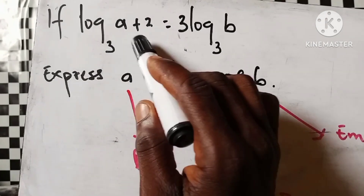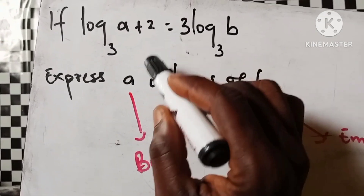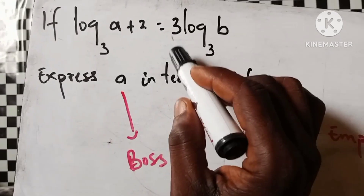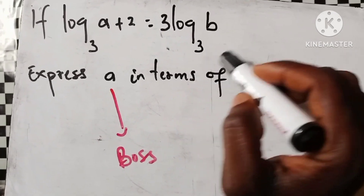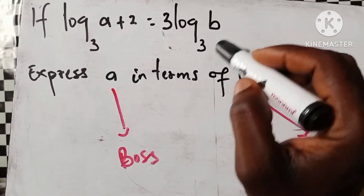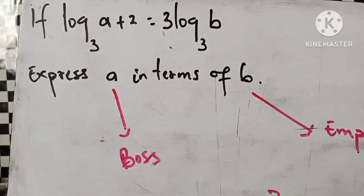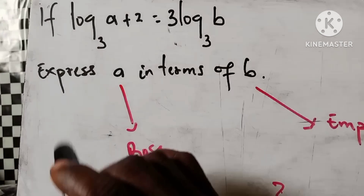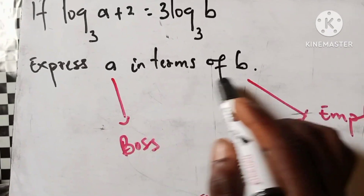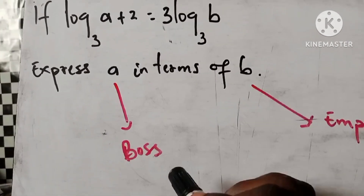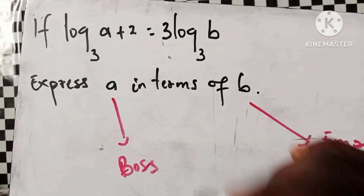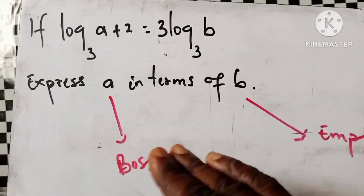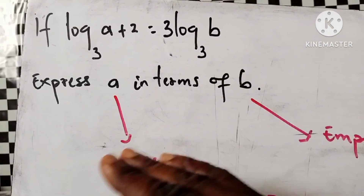If log of (a plus 2) base 3 equals 3·log(B) base 3, we want to express a in terms of B. These are the technical terms of the question.